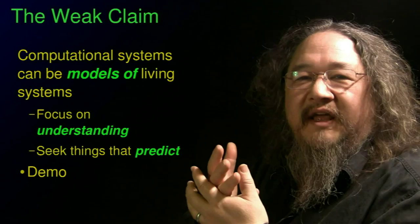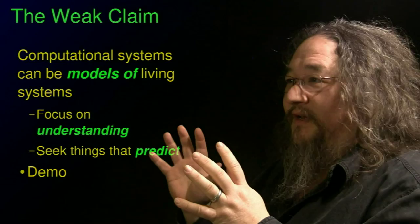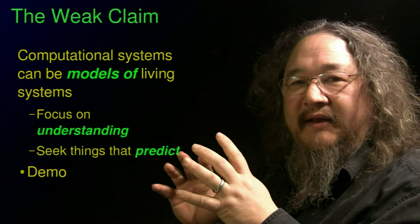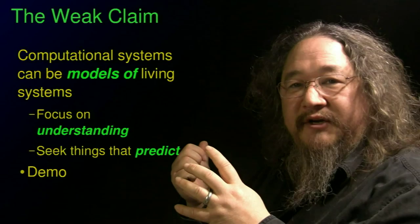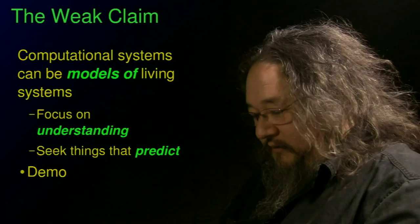We could take the weak claim and say that this computational system is a model of some living system. When we do that, our goal is to understand something about life, or to understand something about whatever system we're claiming it's a model of. And ideally, we'd like to be able to make predictions about whatever it is that it's a model of.